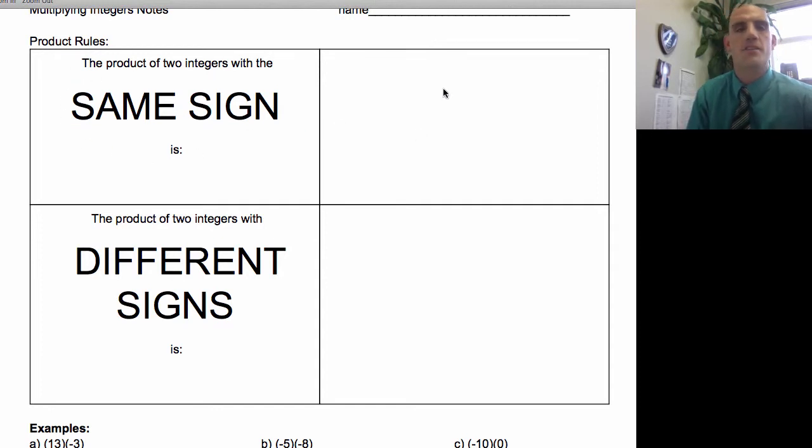They either have the same sign or different sign. So this would be for example, integers with the same sign. I'm just going to stick an example in here. That would be like three times two or negative six times negative two. So that's where they're both the same.